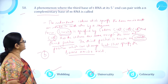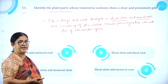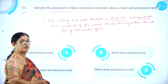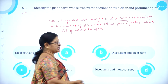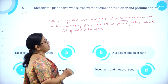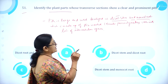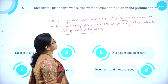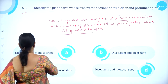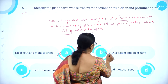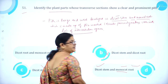Moving on to question number 51. Identify the plant parts whose transverse sections show a clear and prominent pith. Pith is large and well developed particularly in dicot stem and monocot root, made up of thin-walled colorless parenchyma cells with intercellular spaces. So the plant parts showing clear and prominent pith are dicot stem and monocot root. Option D is correct.